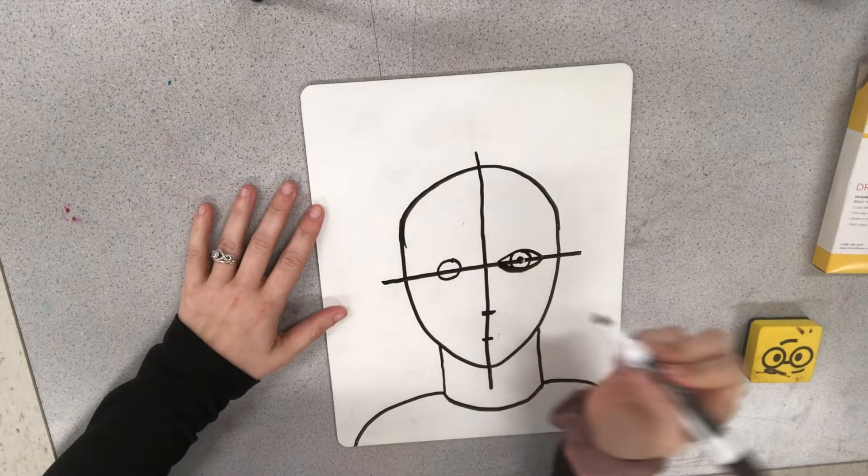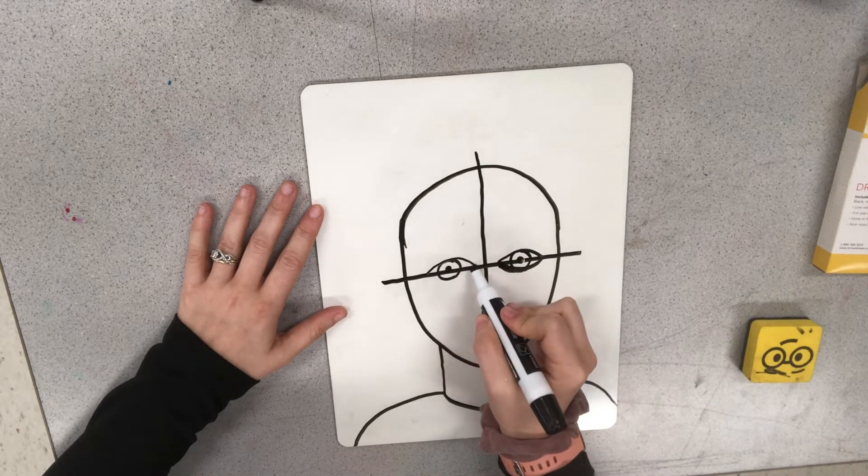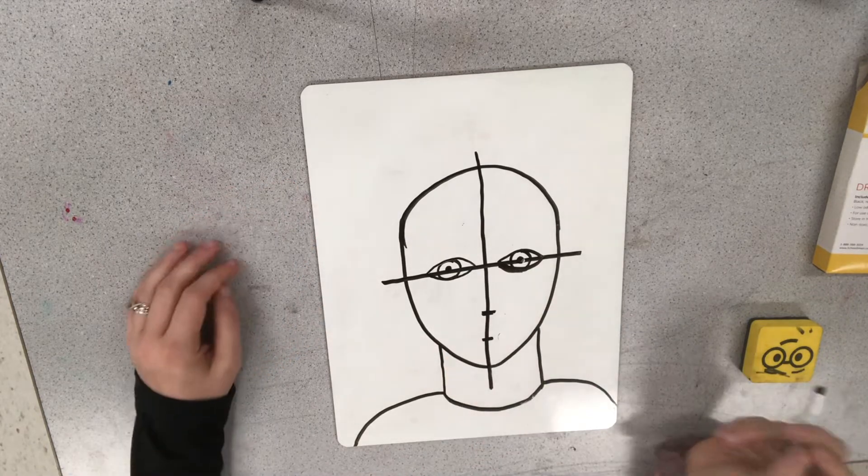And I'm going to do the same thing on the other side. So I'll start with the iris. I'll add the pupil. I've got the rainbow line above it and kind of a smile line below it.